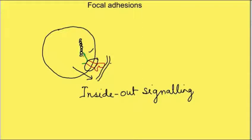This change in the inside of the cell which is coming due to binding of extracellular domain of integrin protein to its ligand is known as outside-in signaling. It's coming from outside, changing something inside.